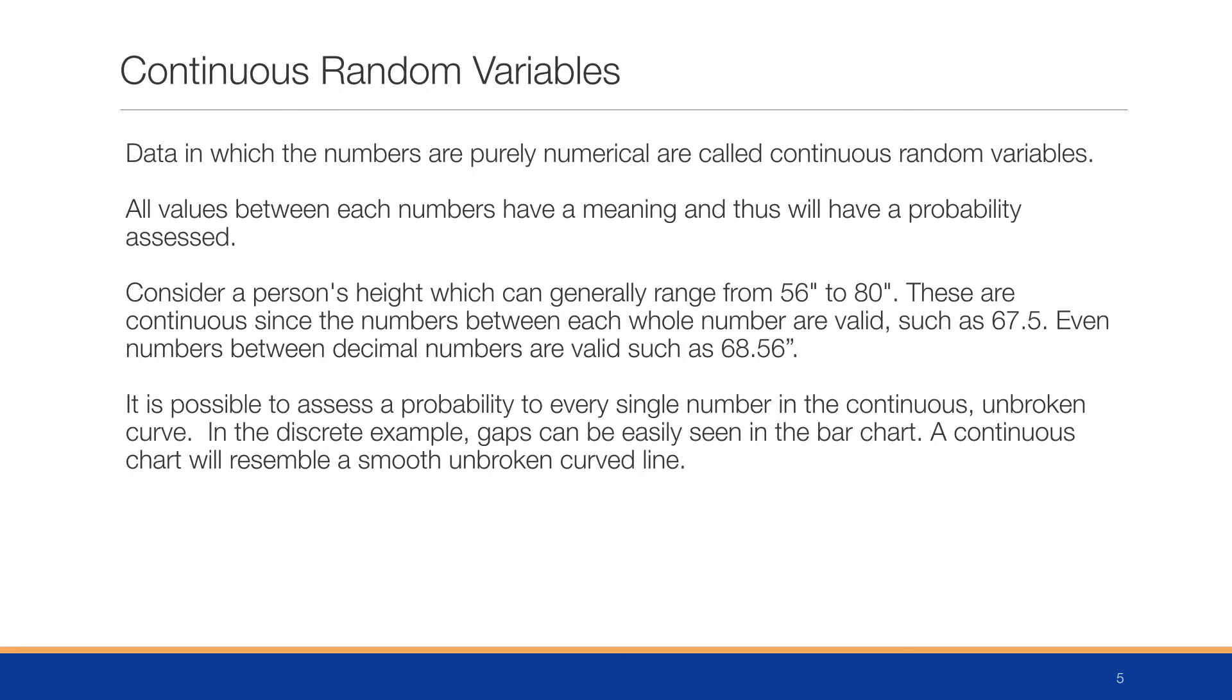A continuous random variable is one in which the numbers are purely numerical, and the numbers between the numbers actually have meaning. Consider a person's height which could range 56 to 80 inches. These are continuous because the numbers between each whole number are valid, such as 67.5, 68.56, and so forth. It is possible to assess a probability to every single number in the continuous unbroken curve.